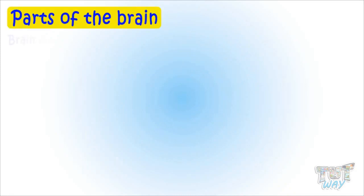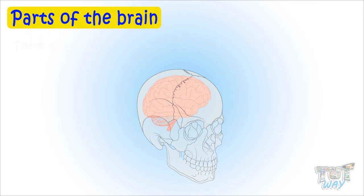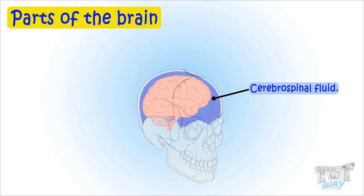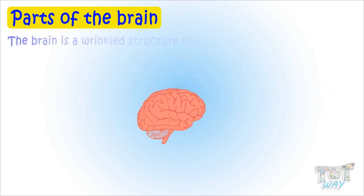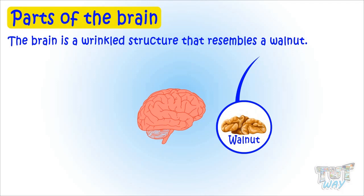Let's learn the parts of the brain. The brain lies well protected inside the bony skull. There is some space between the brain and the skull, and it's filled with cerebrospinal fluid. This fluid acts as a cushion for the delicate brain. The brain is a wrinkled structure that resembles a walnut.